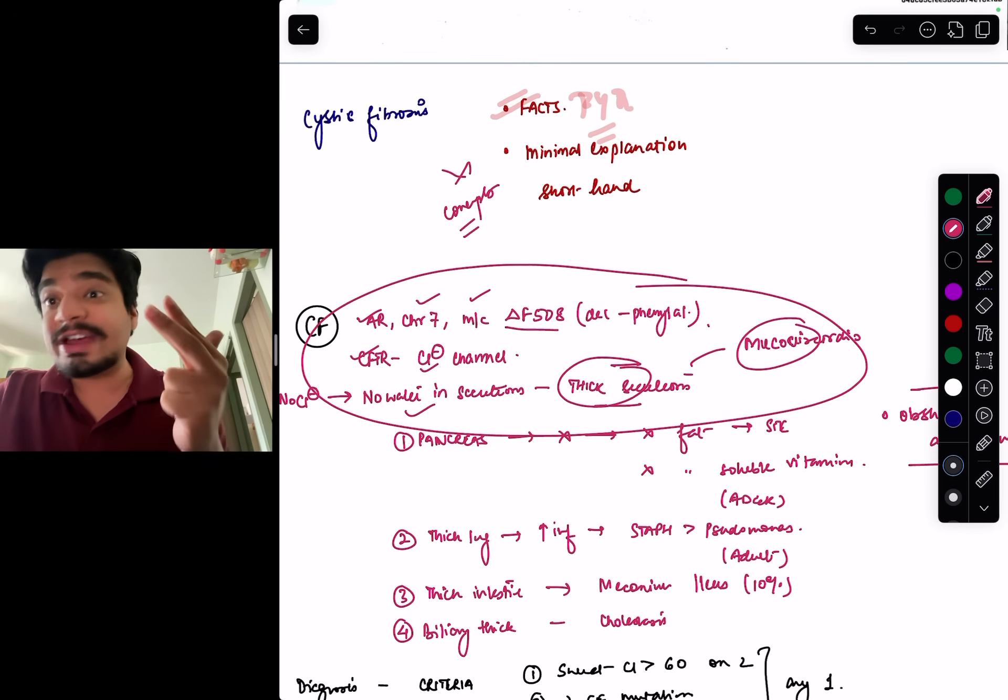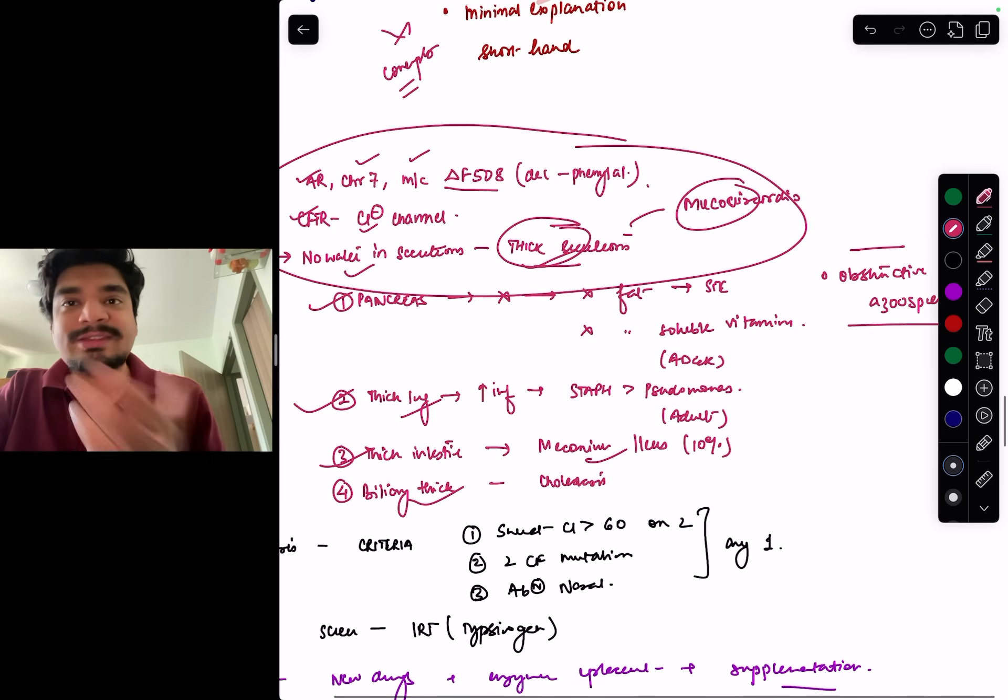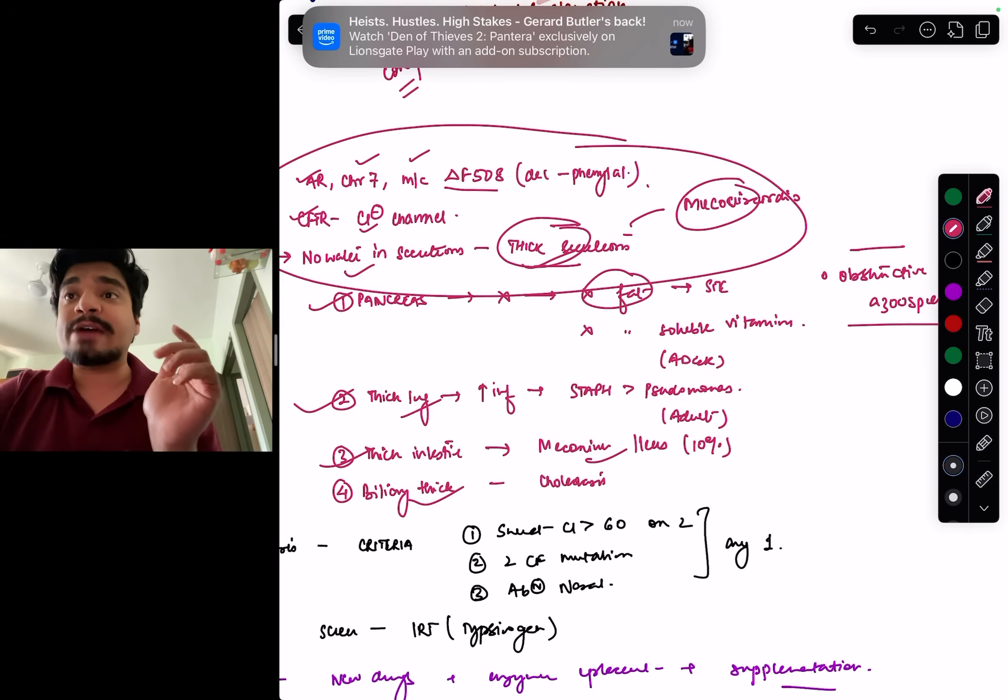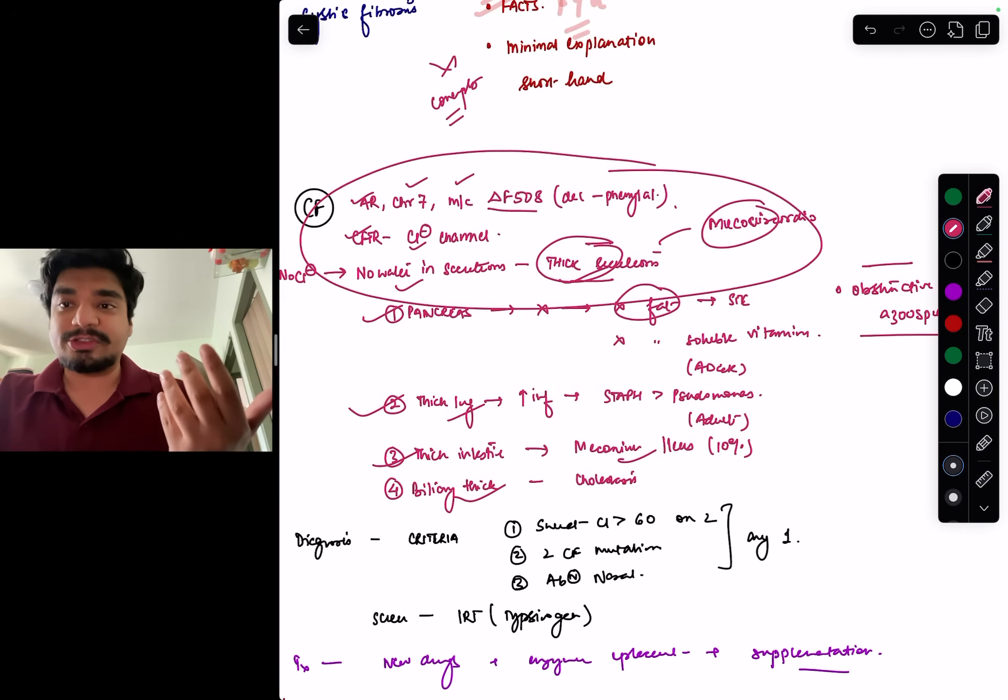So I will start first. In the main notes, it will be written as it is an autosomal recessive disorder. You don't need to write like the entire thing, right? You just write AR, chromosome 7, most common mutation is delta F508, CFTR mutation, which is a chloride channel. No chloride, no water in secretion, resulting in thick secretions. That's why it's called mucoviscoidosis. Now, imagine how much information which is probably given in one page in a main note has been can be written in just one paragraph. But you can only understand this one paragraph if you have first gone through the main notes, then made your own concise notes. Shorthand, no explanation, revisability and recallability part. The high yield material put down in the main notes.